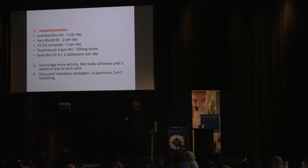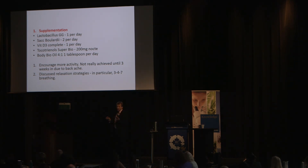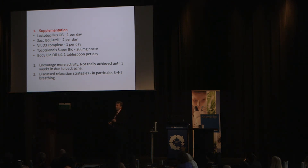Tocotrienols — a type of vitamin E extracted from red palm oil — demonstrated in multiple studies to lower cholesterol. This is my safety box: I can get cholesterol down 20% in 28 days combined with tocotrienols. We also used a ratio of 6-to-1 omega-6 to omega-3 of carefully selected oils as a salad dressing — these are quite good at producing an anti-inflammatory response. More activity was only really achieved in the third week, along with discussing relaxation through breathing techniques.